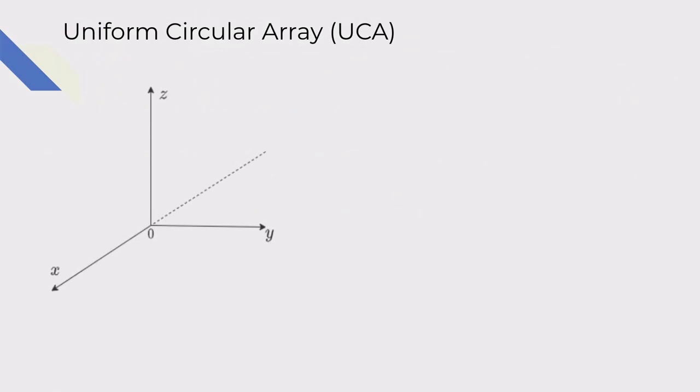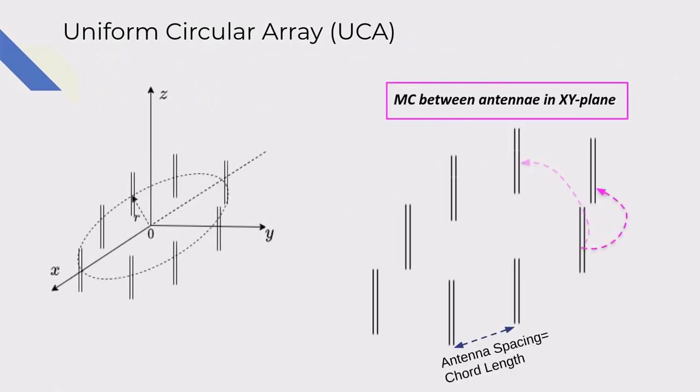In planar UCA, where the antennas are placed on the XY plane with the radius R, there is a symmetric effect of mutual coupling based on their horizontal space between two antennas. Here, the horizontal space in UCA is a chord length of the circle.